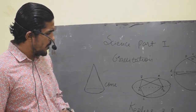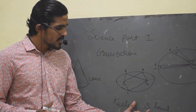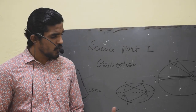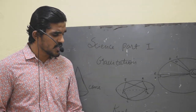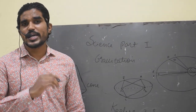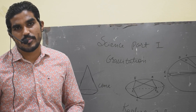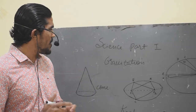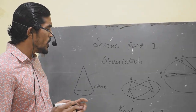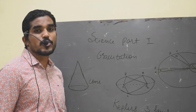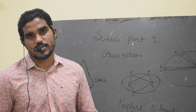Today we are going to share about Kepler's three laws of motion. But before starting Kepler's three laws of motion, you need to study one basic concept. What is the basic concept? The basic concept is that you need to know about the concept of ellipse.